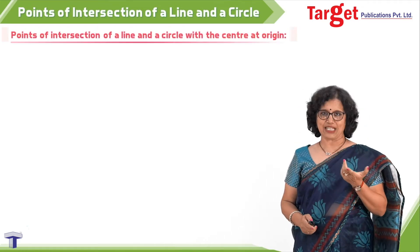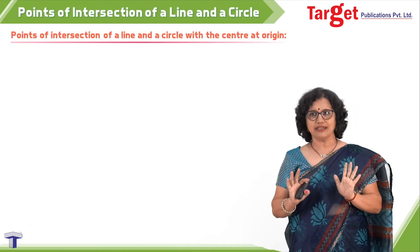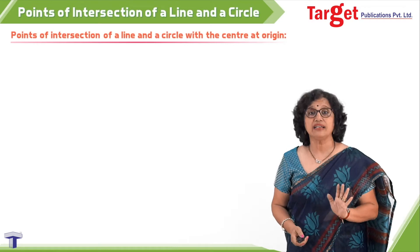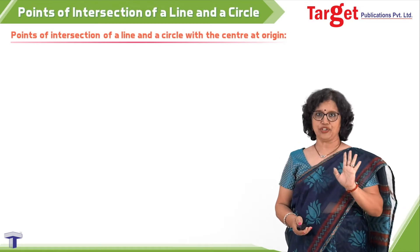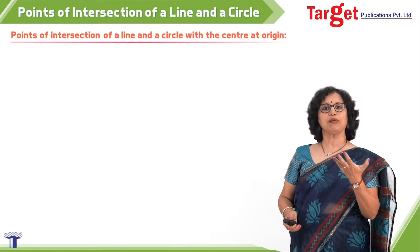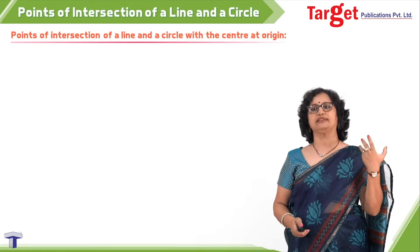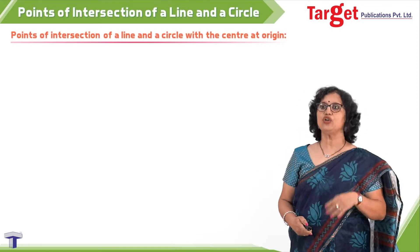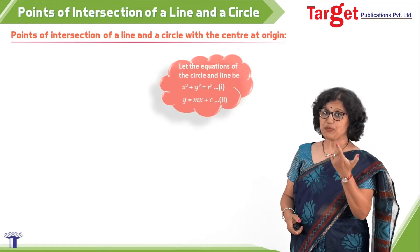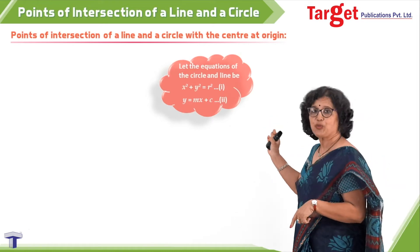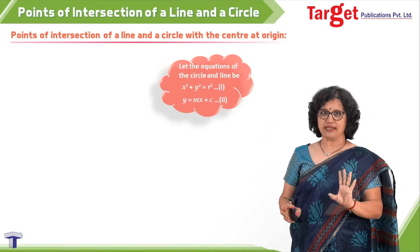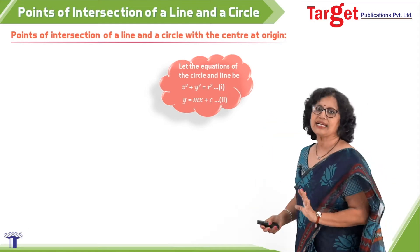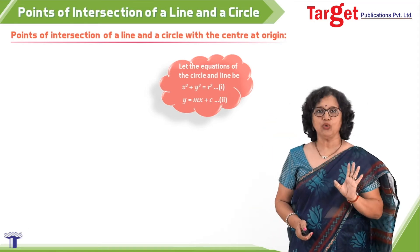So what are we expecting? We expect one circle, and I am taking the circle in its simplest form where the center is at the origin. That means I will be starting with x squared plus y squared equal to r squared. Then we would be talking about points of intersection of a line of the form y equal to mx plus c.